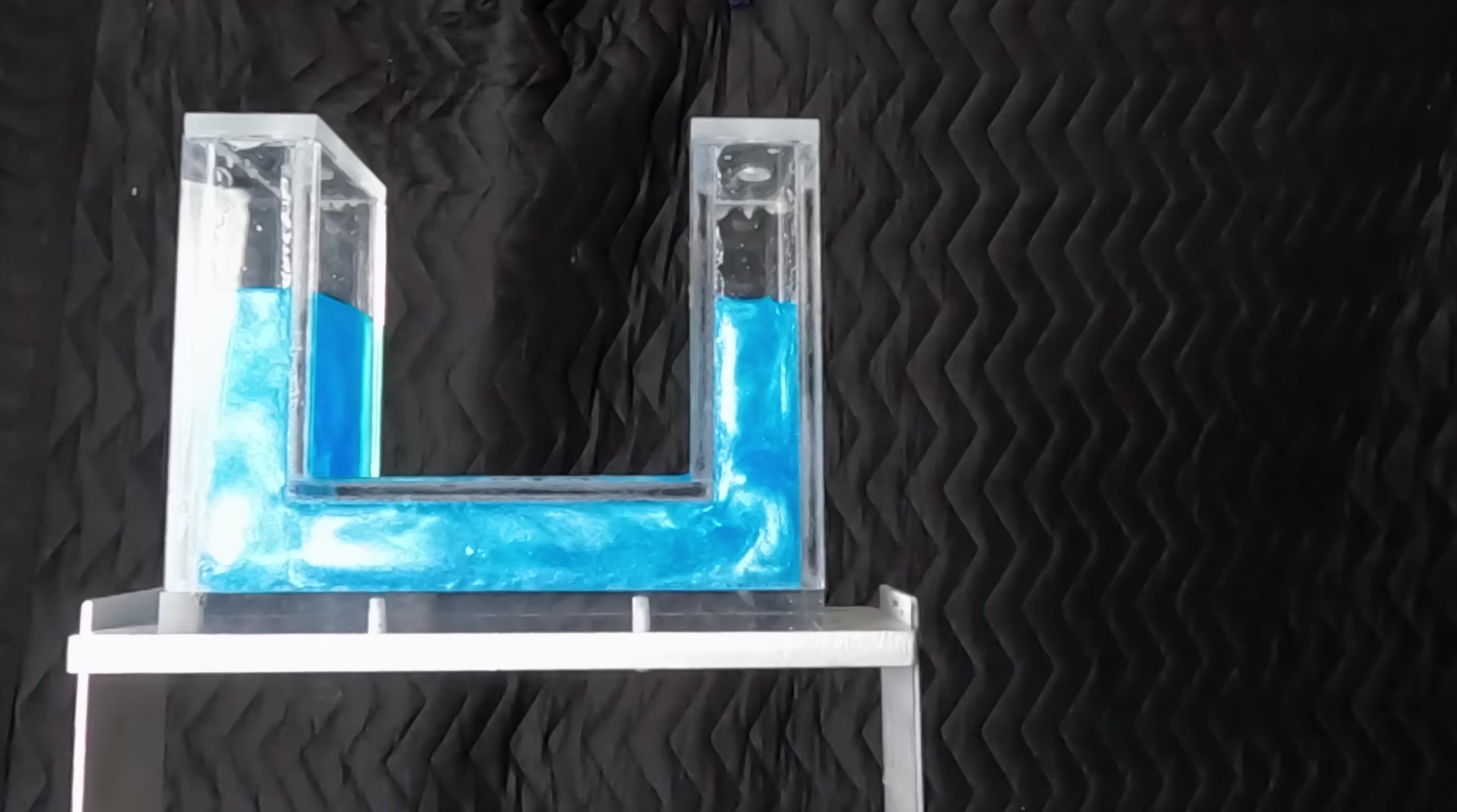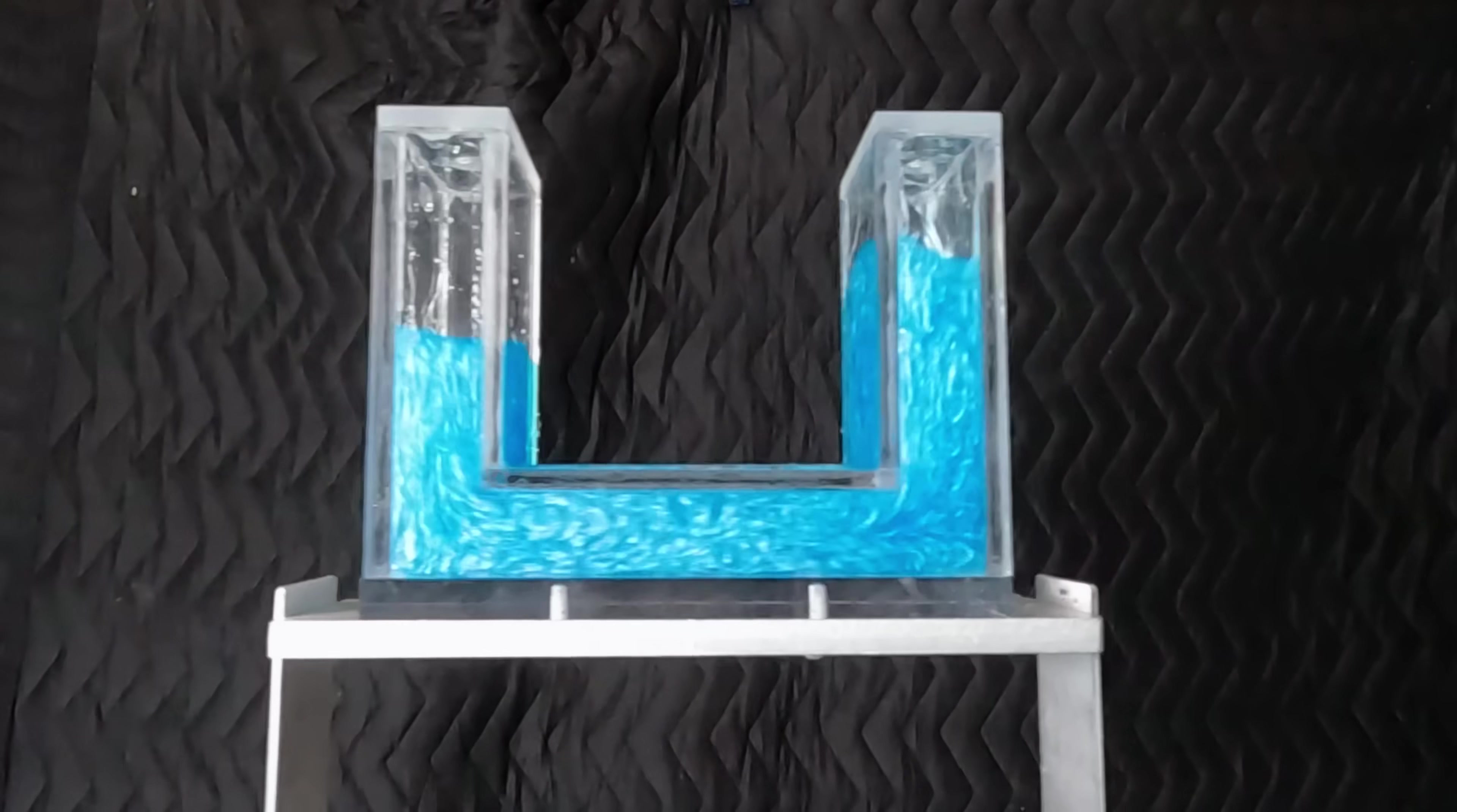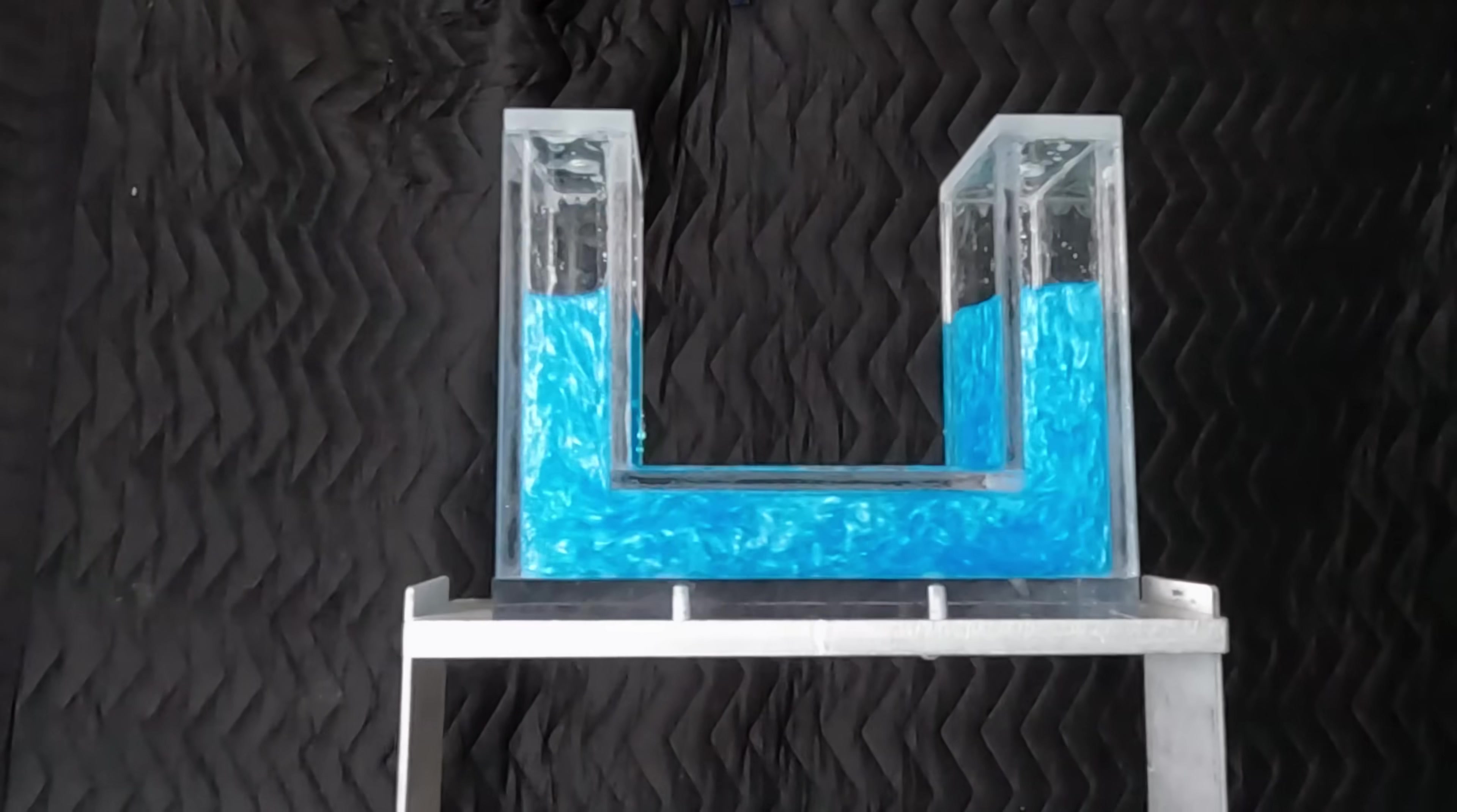But tuned column liquid dampers have a few downsides. One is that they really only work for flexible structures like my demo. Just like in a pendulum, the longer the flow path in a column damper, the lower the frequency of the oscillation. For stiffer buildings with higher natural frequencies, tuning requires a very short liquid column which limits the mass and damping capability to a point where you just don't get much benefit. The other thing is that this is still kind of a complex device with intricate shapes and a custom orifice between the two columns, so we can get even simpler.